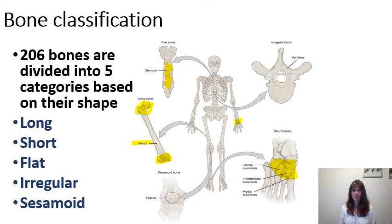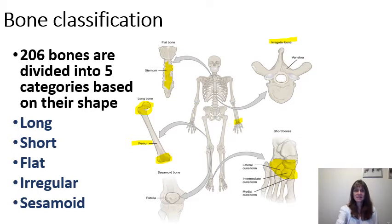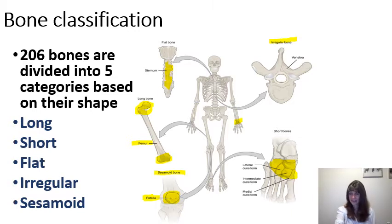The pelvic bones are flat. We also have irregular bones, such as the vertebra — plural vertebrae — which are considered irregular bones. The last type is sesamoid. The patella, which you may think of as your kneecap, is shaped like a sesame seed, and that's where it got its name as being sesamoid — resembling a sesame seed in shape.